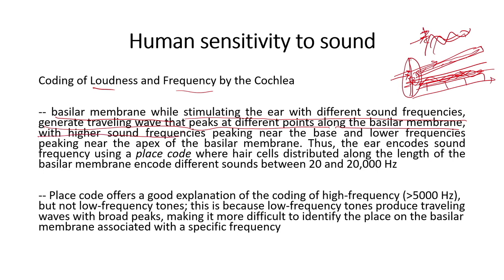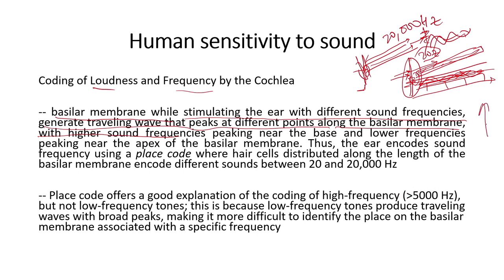Higher sound frequencies peak at the base of the basilar membrane — the point connecting it to the oval window. The highest frequencies, around 20,000 Hz, peak at the base, and as you move along the membrane you find responses to lower and lower frequencies, with 20 Hz peaking at the apex. This arrangement is called the tonotopic arrangement of the basilar membrane — higher frequencies near the base, lower frequencies near the apex.